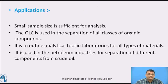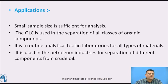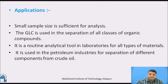Applications of GLC: only a small sample size is sufficient for analysis. GLC is used in the separation of all classes of organic compounds — nearly all organic materials can be analysed and separated using this chromatography technique. It is both an analytical and a separation technique. For example, when preparing nitroaniline from nitrobenzene, three derivatives can be obtained: 2-nitroaniline, 4-nitroaniline, and 6-nitroaniline, and all three isomers can be separated. It is a routine analytical tool in laboratories for all types of materials.